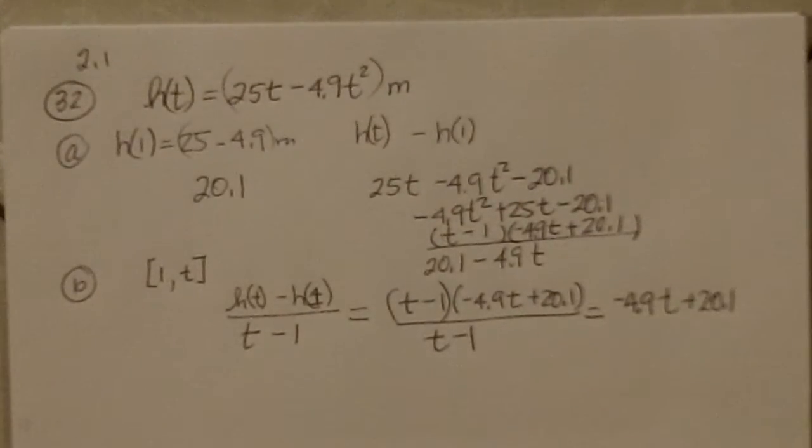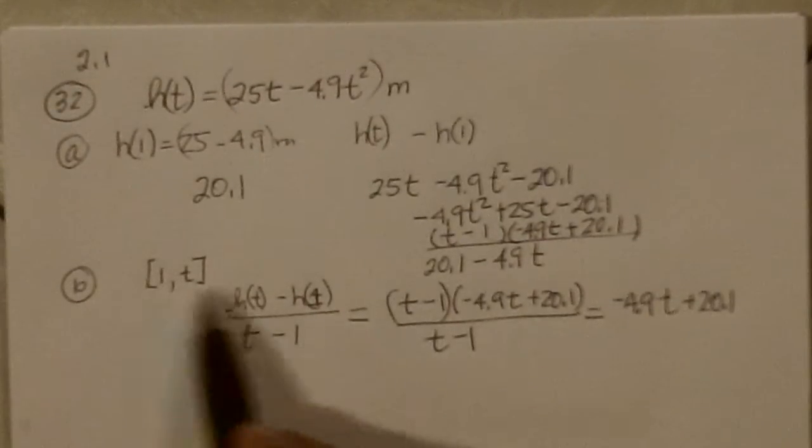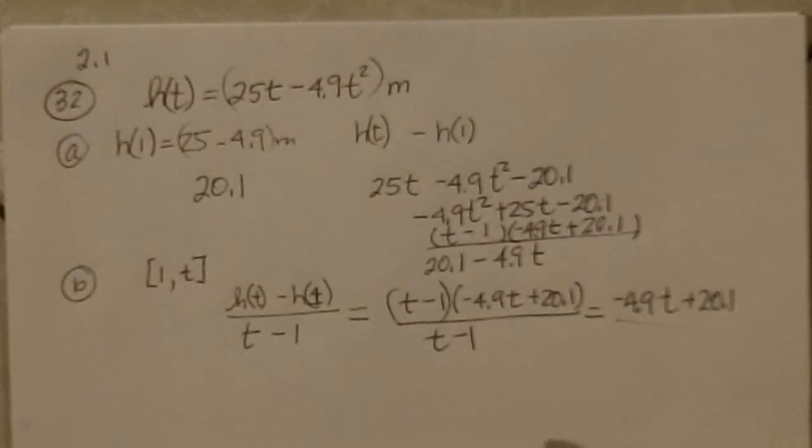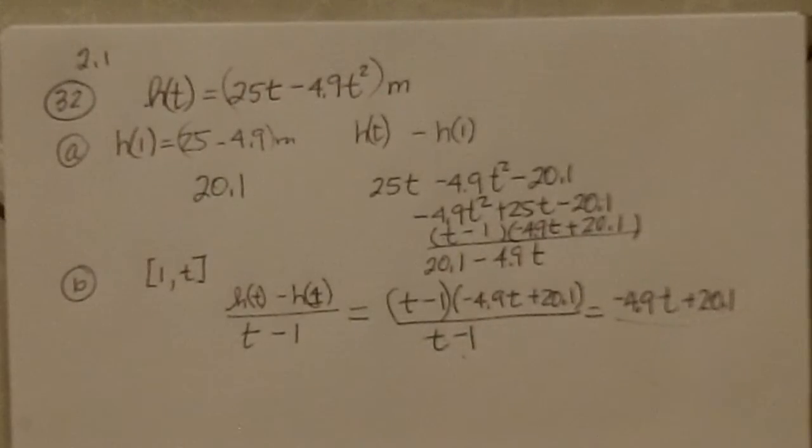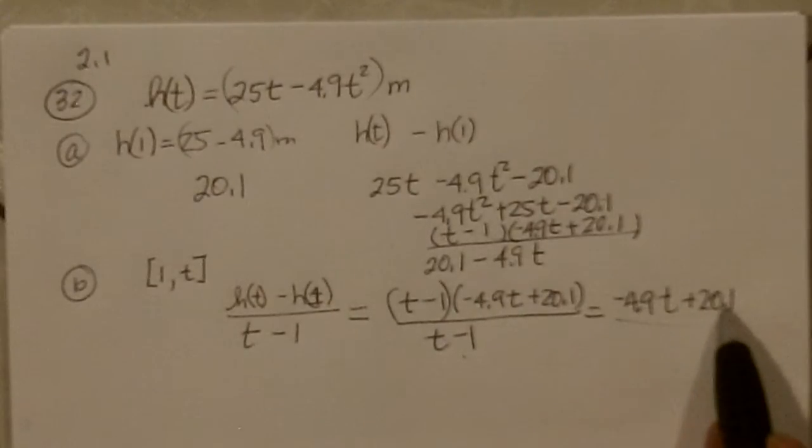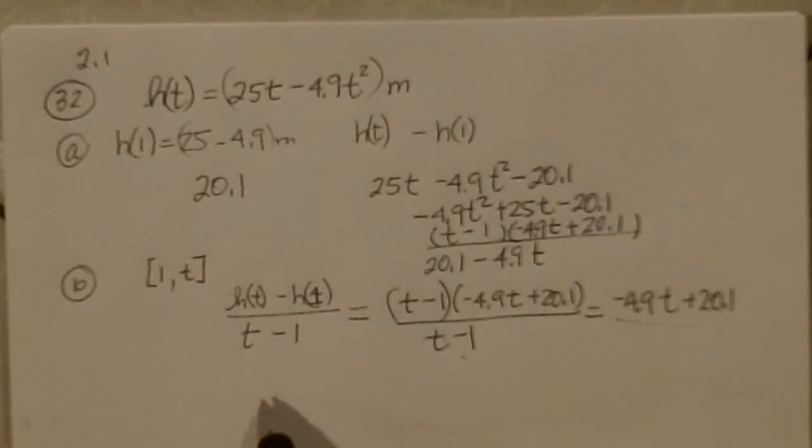And now they said put things in close to 1 into this. Well, since these canceled, we can actually put in 1, and we get -4.9 + 20.1. You put things in close to it, you also will get close to the value we're going to get from that, which would be 15.2.